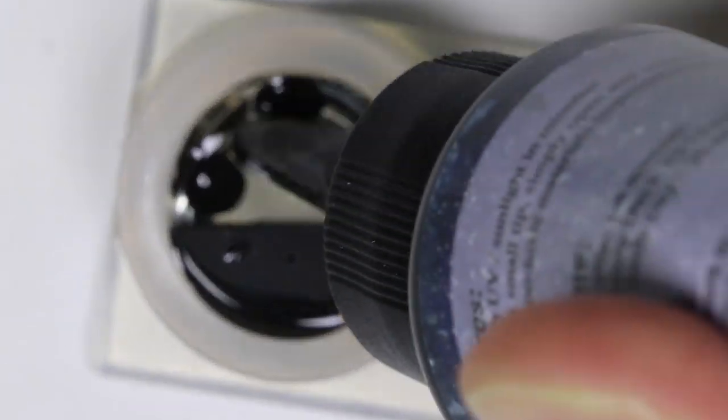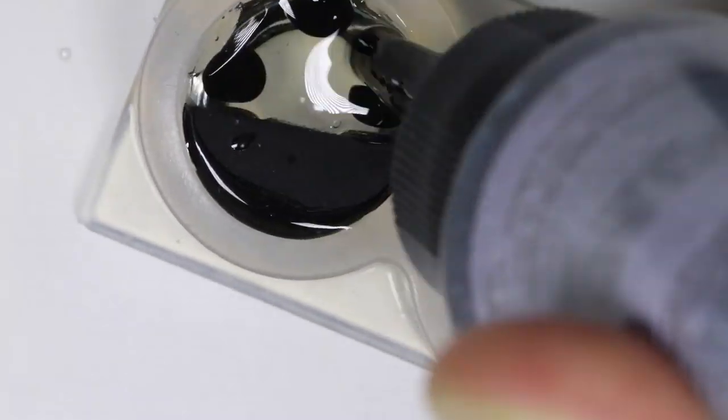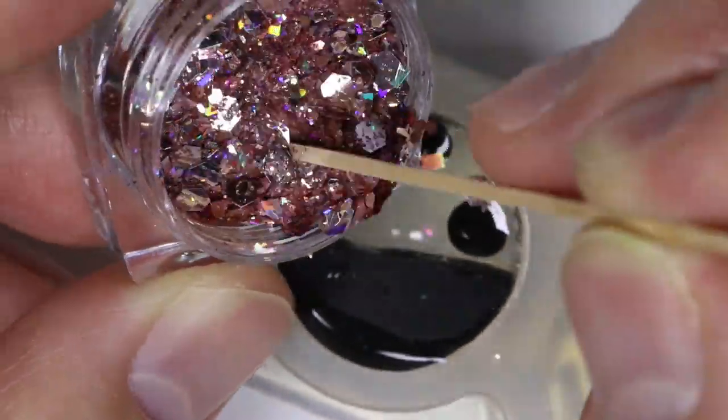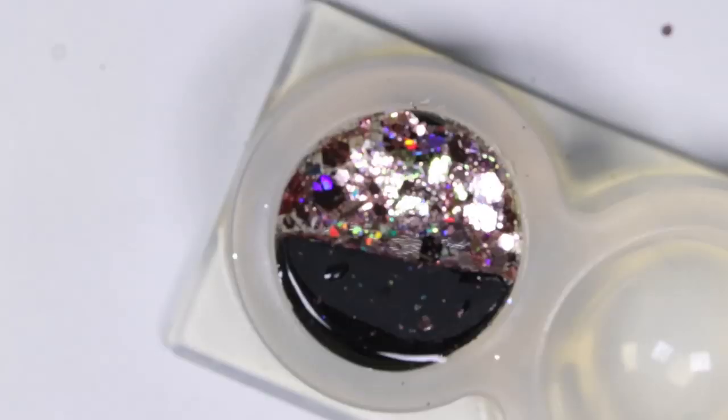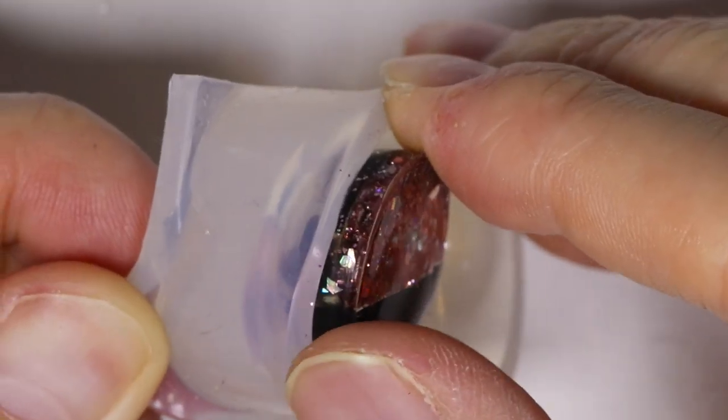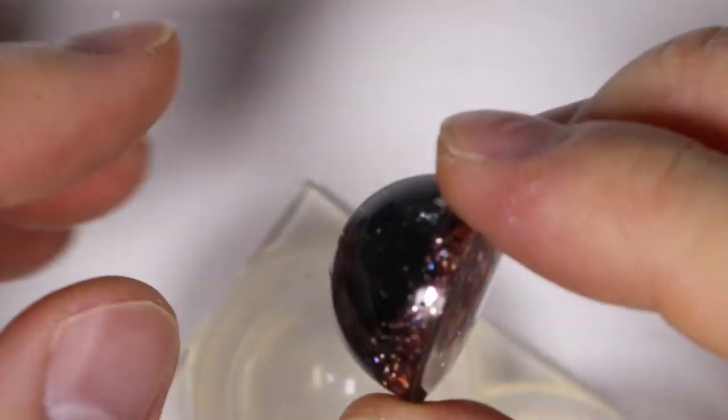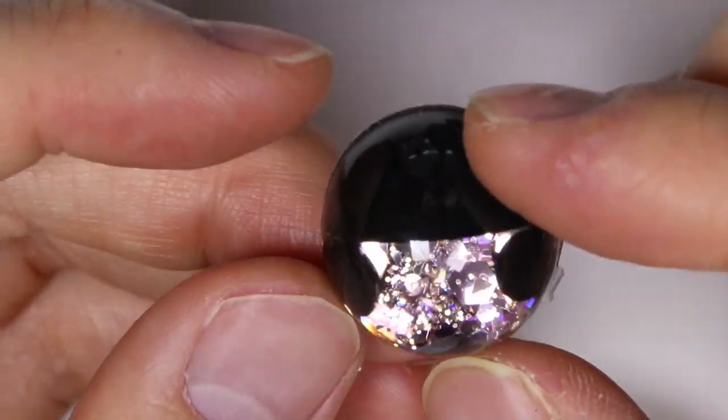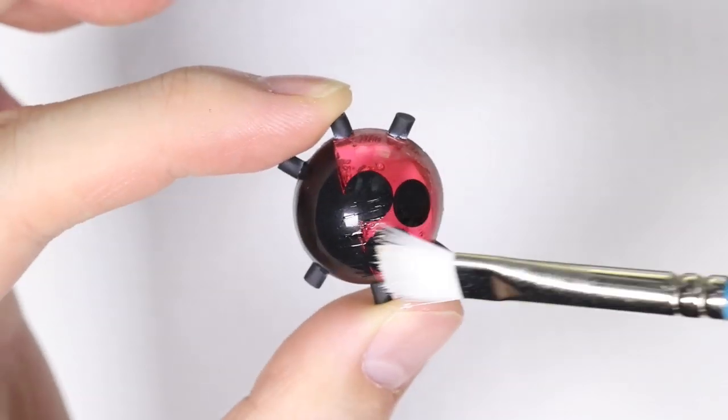But this time instead of coloring it with some UV pigment we're going to add some glitters instead. And we're going to let that cure. And here is the glittery one. The backside looks a lot more shinier than the front side I think.